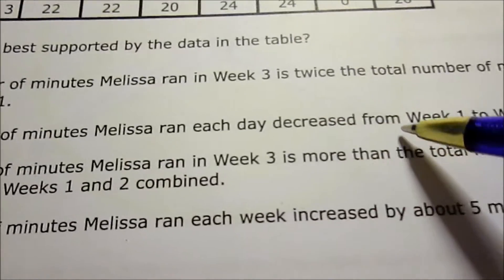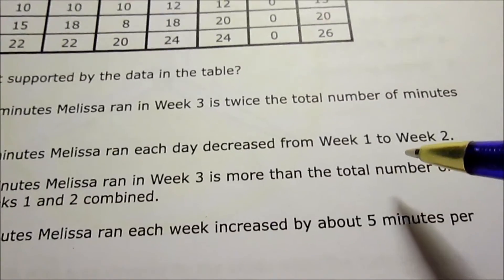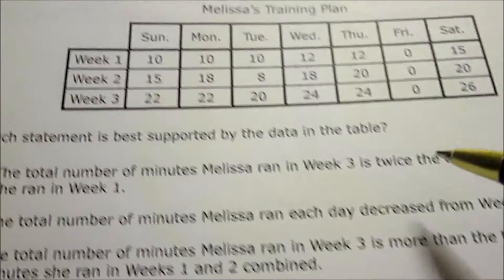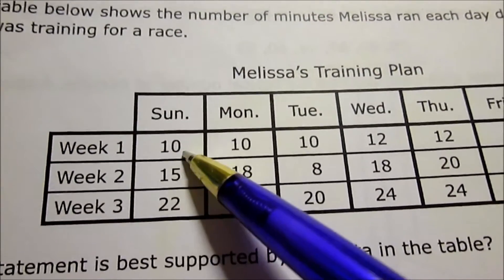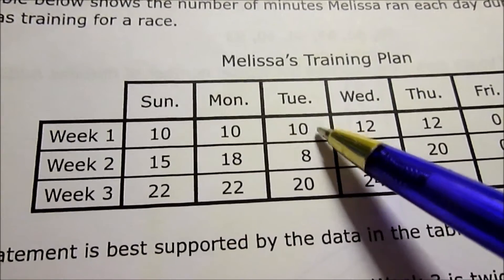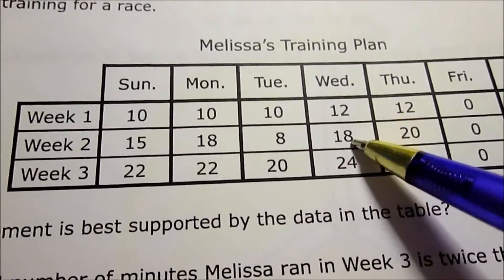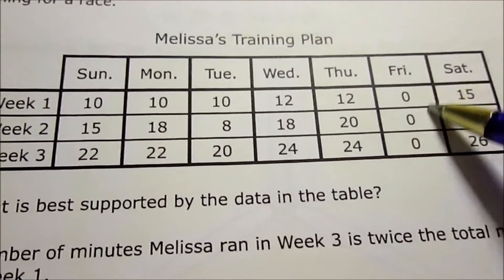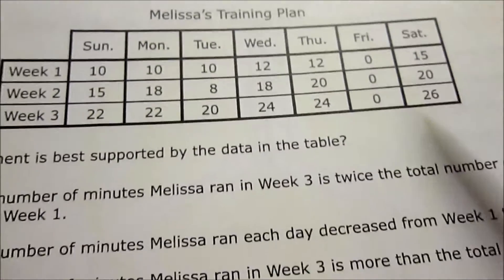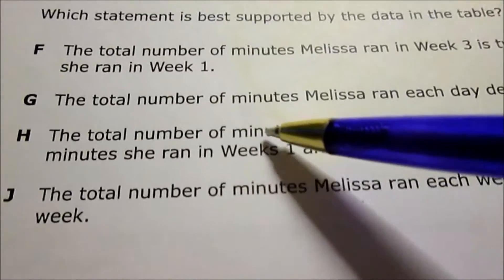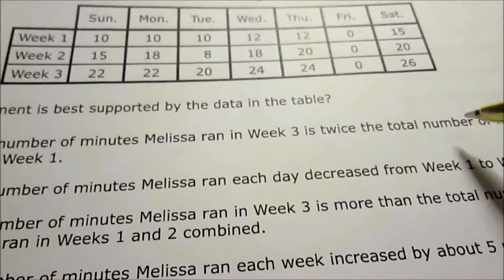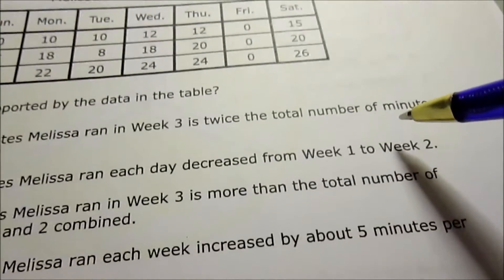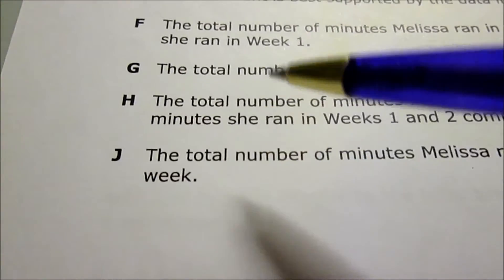G: Total number of minutes Melissa ran each day decreased from week one to week two. Let's see, week one to two: that's increasing, increasing, that's decreasing, increasing, increasing, stays the same, increasing. So for the most part, the total number of minutes Melissa ran each day did not decrease. A lot of it is just increasing, so G is not a good choice.